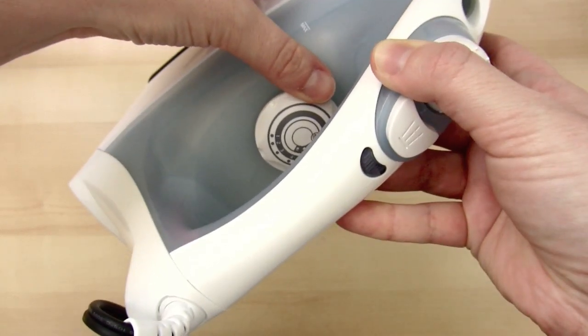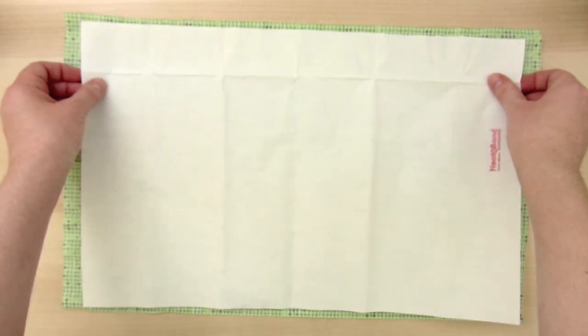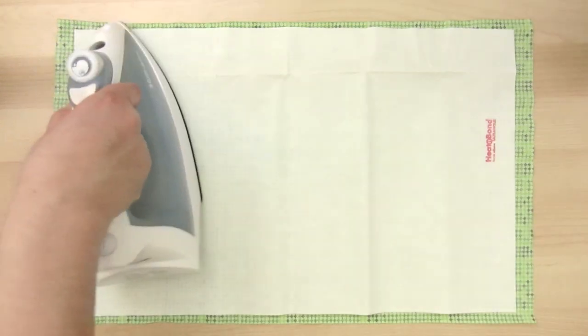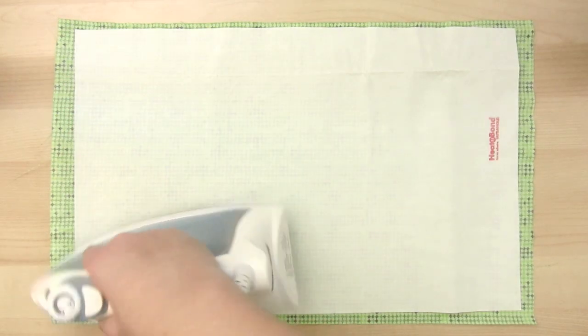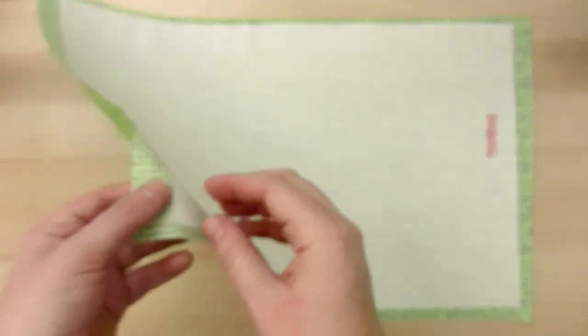Set your iron to medium heat. On your ironing board or table, place the fabric face down and iron the HeatNBond with the rough side down. Iron each area for about 8 seconds. Then peel the top layer off.